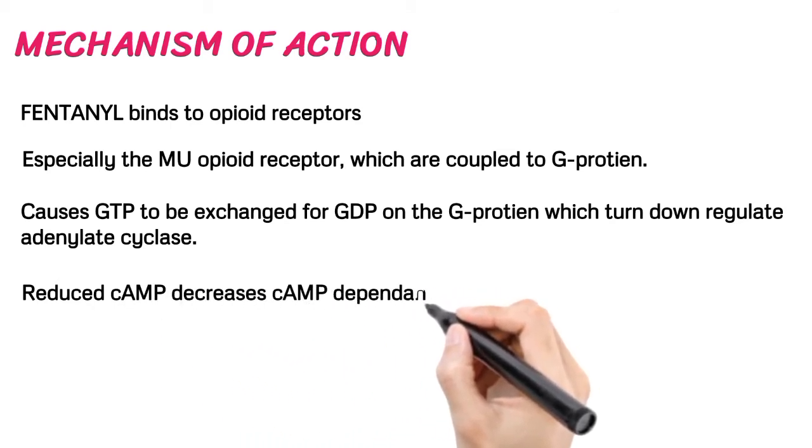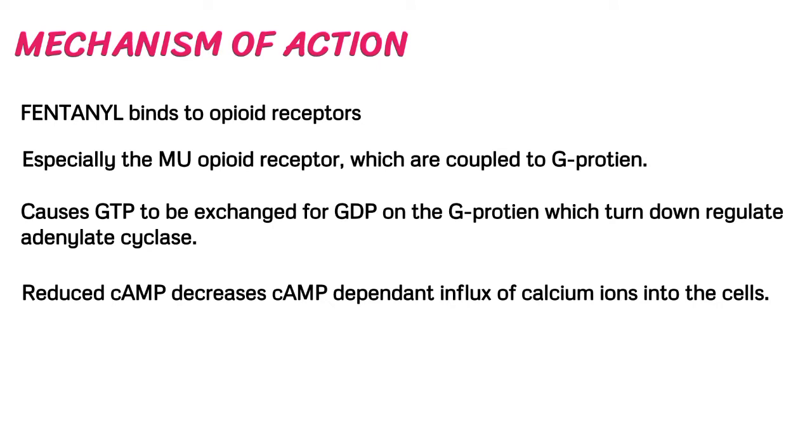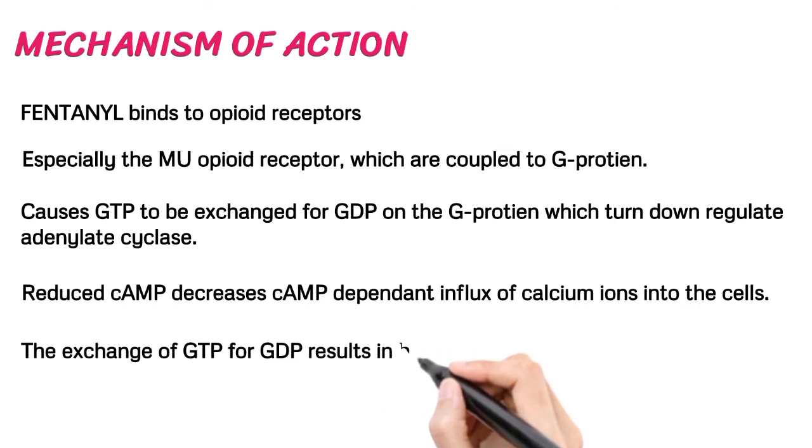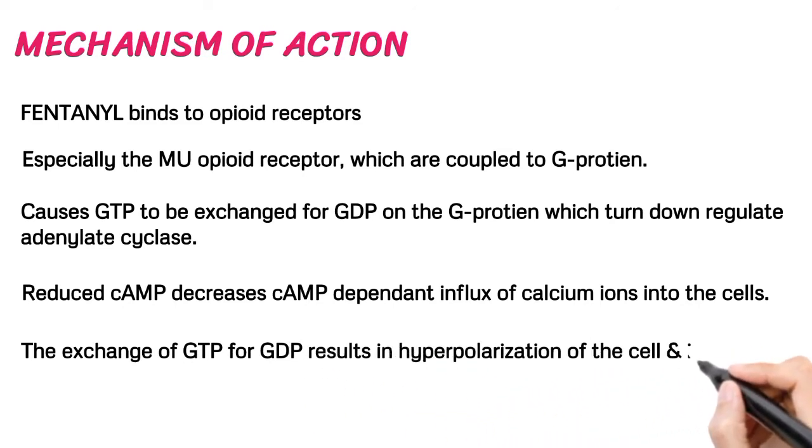Reduced cAMP decreases cAMP-dependent influx of calcium ions into the cells. The exchange of GTP for GDP results in hyperpolarization of the cell and inhibition of nerve activity.